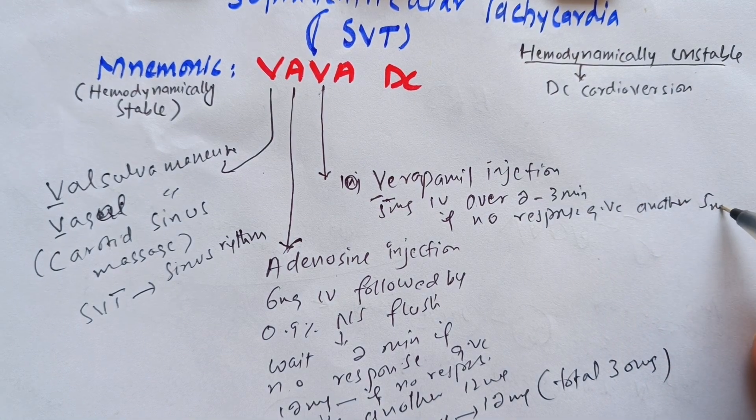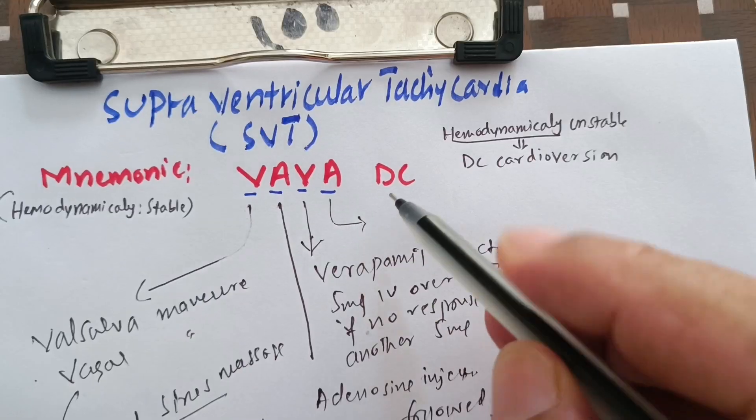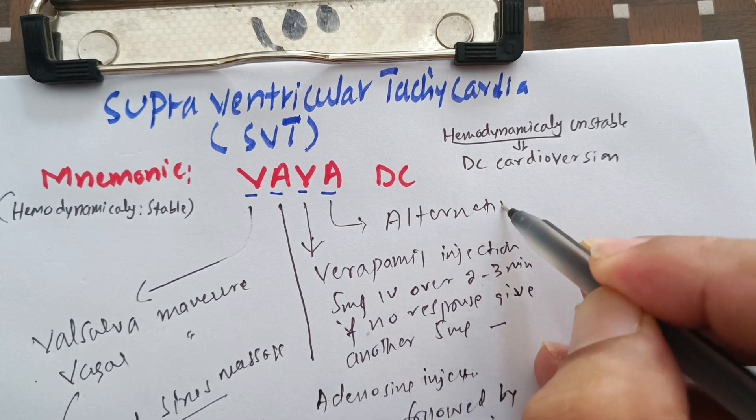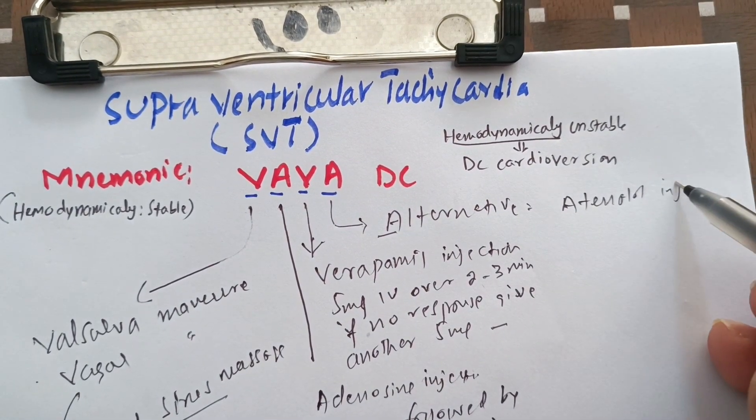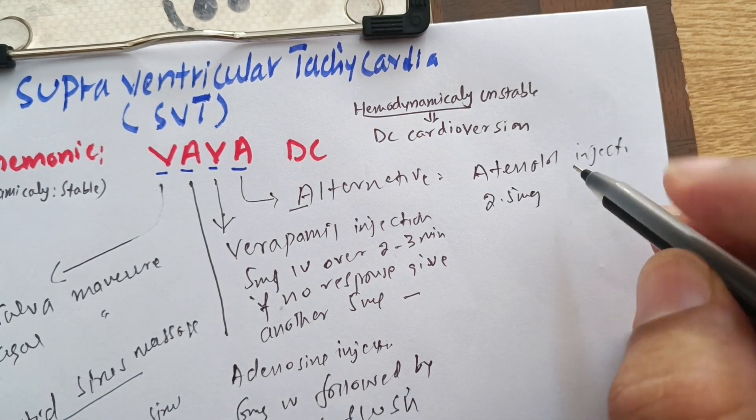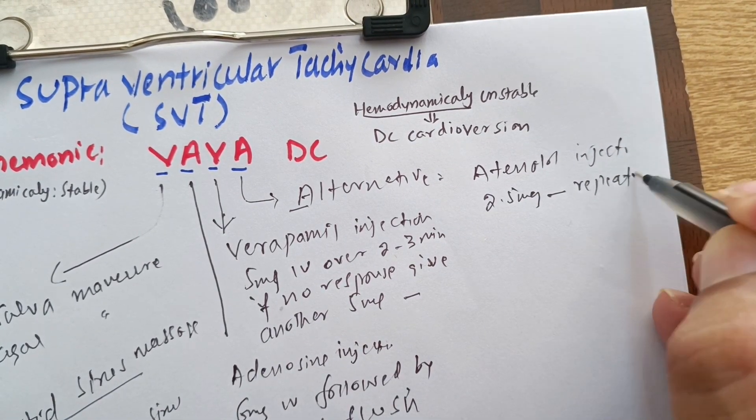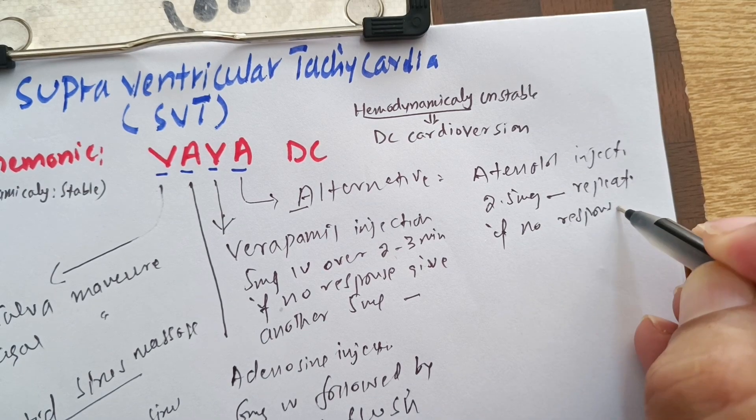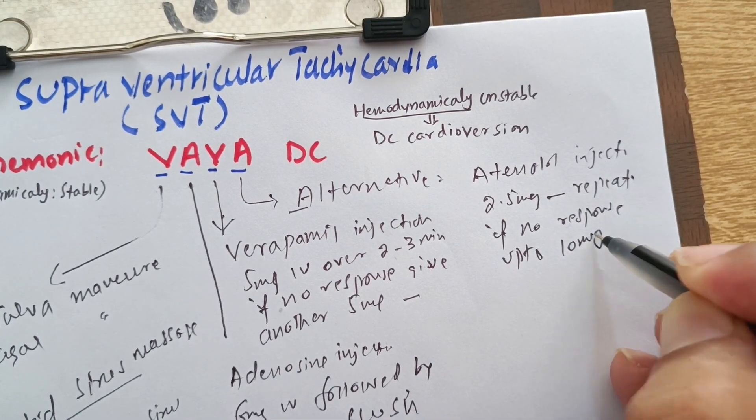Alternative for verapamil is atenolol injection. Atenolol dose is 2.5 mg. We will give 2.5 mg IV. If there is no response, we can repeat up to 10 mg.